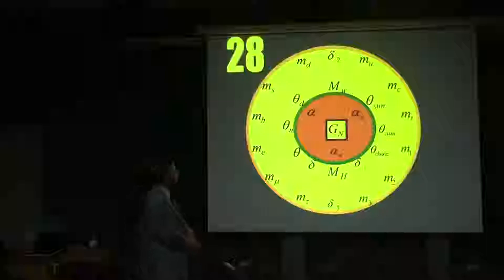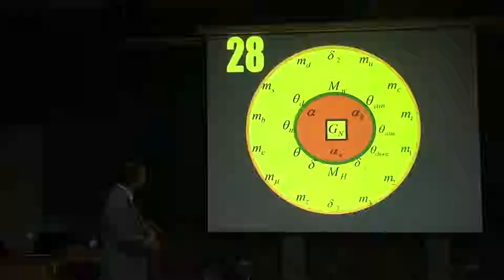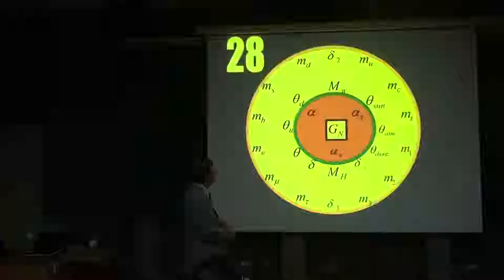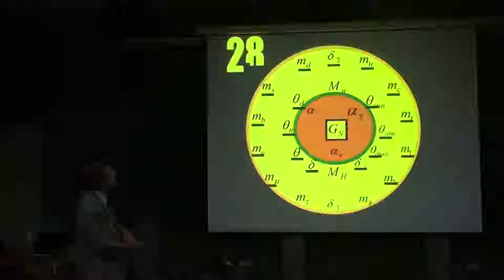I like to describe these fundamental constants in terms of a big circle. On the outside you have the various fermion masses: the up, charm, and top quark masses, the three neutrino masses, the masses of the down quarks, and the masses of the 3 charged leptons. Here you have the flavor mixing parameters for leptons and for quarks. In the middle, you have the three coupling constants — the fine structure constant, alpha_strong for the strong interaction, and alpha for the weak interaction — and at the very center, Newton's constant. Again, if you count this, it is 28.